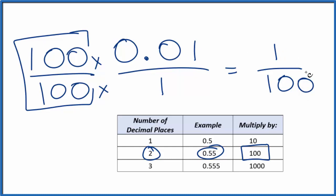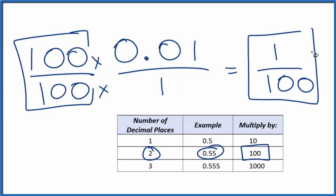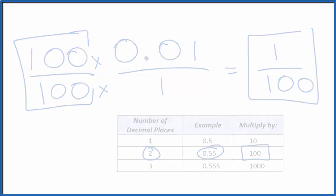If you divide 1 by 100, you'll get 0.01. So this is the fraction in simplest form — we can't reduce this any further. This is Dr. B converting 0.01 to a fraction. It turns out that it's equal to 1 over 100. Thanks for watching.